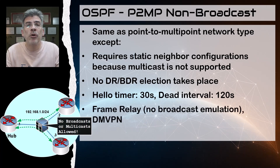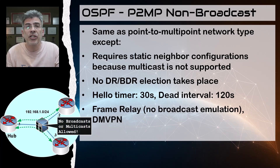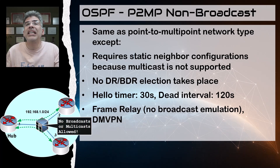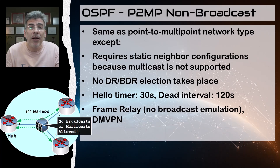The default hello and dead timers are 30 and 120 seconds respectively. This network type is used on hub-and-spoke topologies where the hub can reach all spokes but the spokes cannot directly reach each other, and multicast is not supported. This includes technologies such as frame relay without broadcast emulation, as well as some DMVPN deployments without multicast support. The key idea is that we must choose the network type that fulfills the requirements of our underlying network technology and topology.